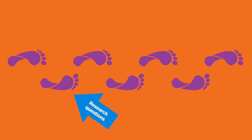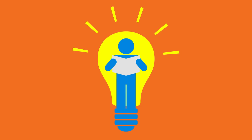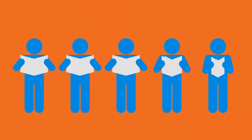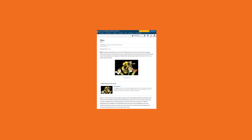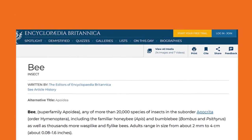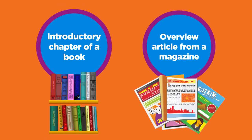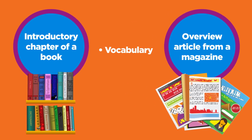As part of the earlier steps of the research process — determining your research questions and selecting keywords — you already did some broad general reading to develop background knowledge about your topic. Depending on your comfort level, you may need to do even more background reading. If so, sort through your sources and pick one that presents a general overview. An encyclopedia article is often a good place to start, or try the introductory chapter of a book or an overview article from a magazine. This will help you understand the vocabulary, keywords, and ideas related to your topic.